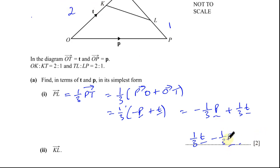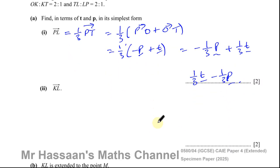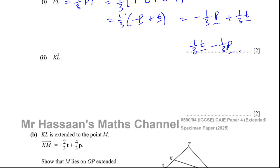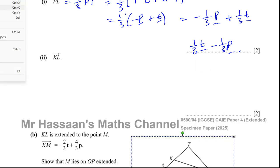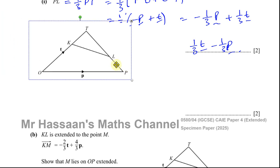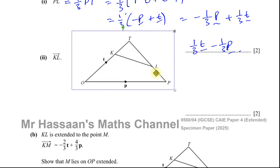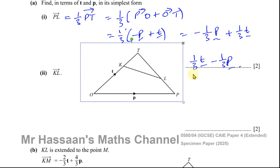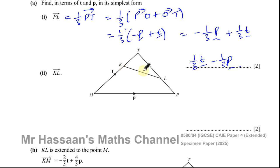Now question two says find the vector from K to L. I'll take a copy of the diagram and put it here so I don't have to keep scrolling up and down. So from K to L is along here.